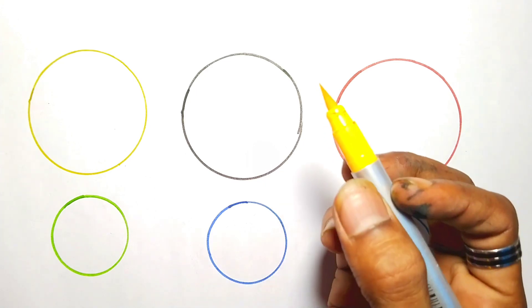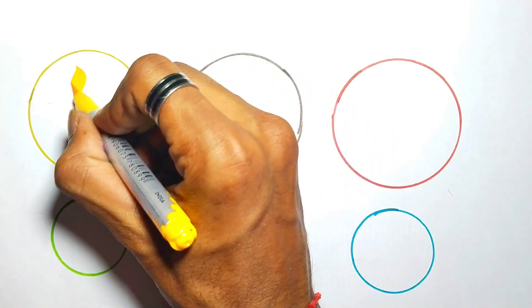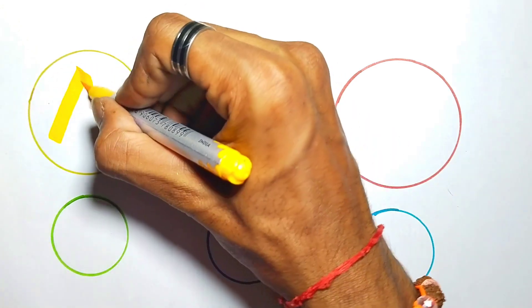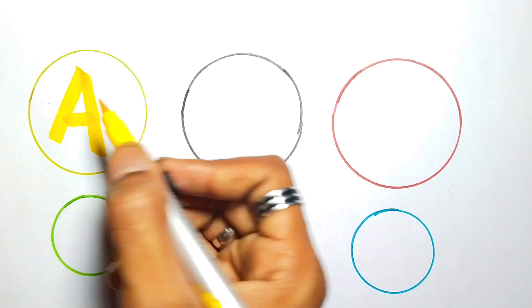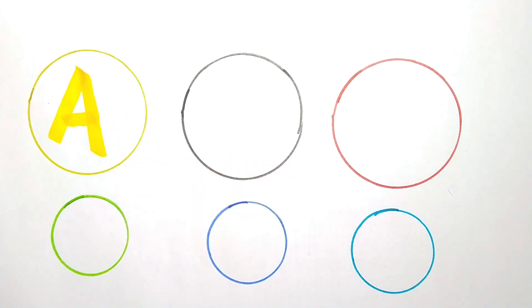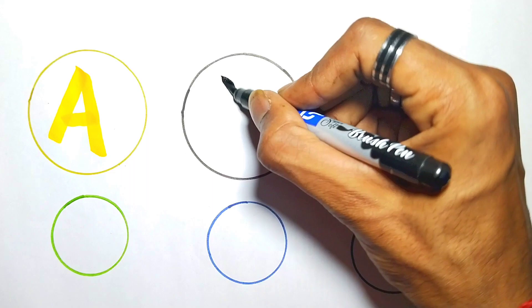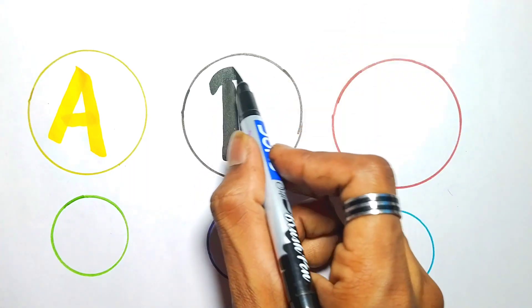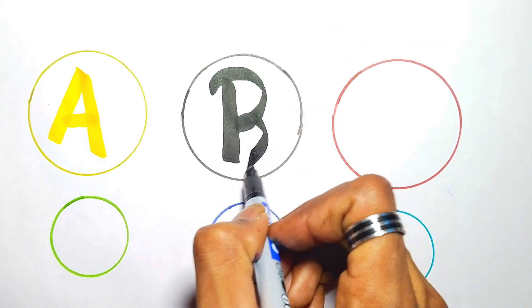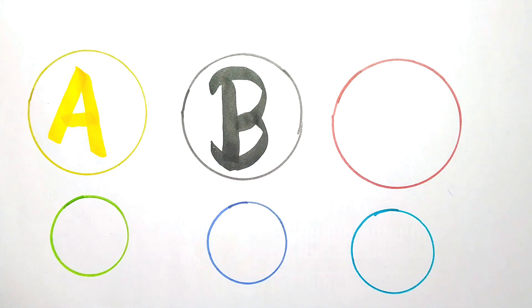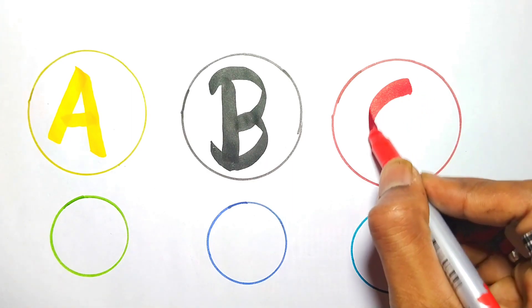Yellow color A. A for Apple. Black color B. B for Ball. Red color C.